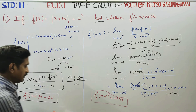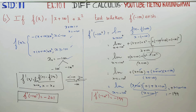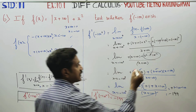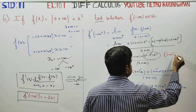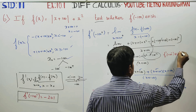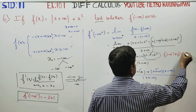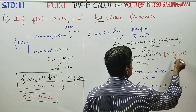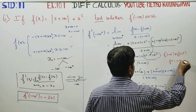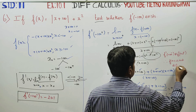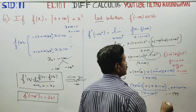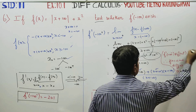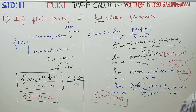The two answers are not equal. The left-hand derivative of minus 100 is not equal to the right-hand derivative of minus 100. Therefore, f(x) is not differentiable at x equal to minus 100. This is your final answer. Thank you.